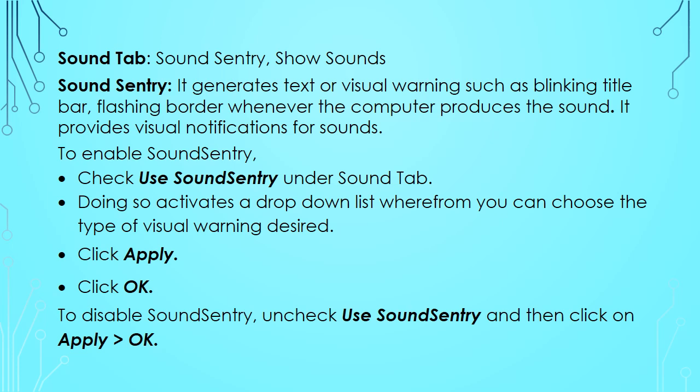The second tab of Accessibility Options is the Sound tab. You can set two options from here: Sound Sentry and Show Sounds. Sound Sentry generates text or visual warnings such as a blinking title bar or flashing border whenever the computer produces a sound. It provides visual notifications for sounds. To enable Sound Sentry, click the 'Use Sound Sentry' checkbox under the Sound tab, which activates a dropdown list where you can choose the type of visual warning desired, then click Apply and OK. To disable, uncheck 'Use Sound Sentry' and click Apply and OK.